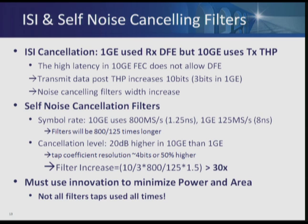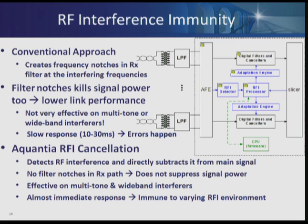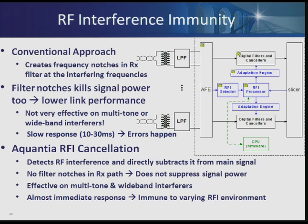To achieve that we need significant optimization and innovation. In 1G, data bandwidth was up to 62.5 MHz — all FCC data transmission was above that and we could simply put a low-pass filter. In 10G we have 400 MHz and cannot simply use a low-pass filter. Conventionally, the approach was to put a notch filter whenever a single interfering frequency is detected. But the problem was the link had to be interrupted for tens of milliseconds, and the data itself was being notched — so the power of the data was eaten up and performance came down.